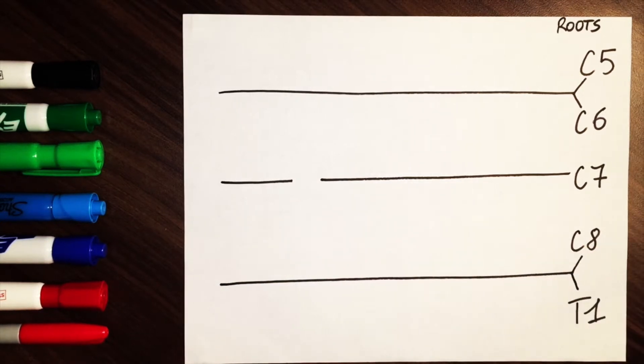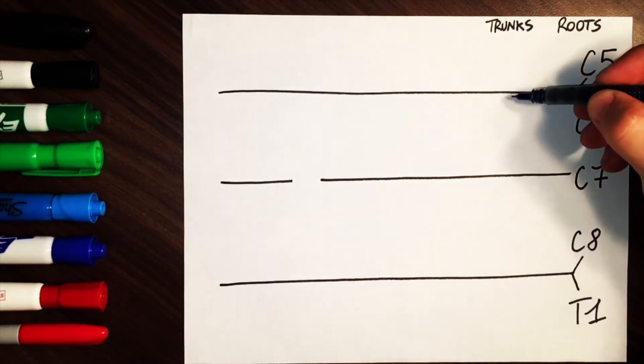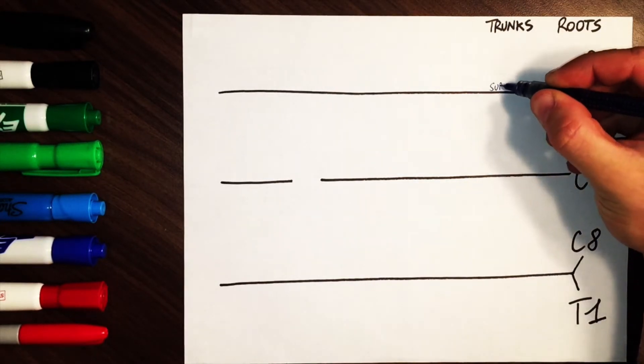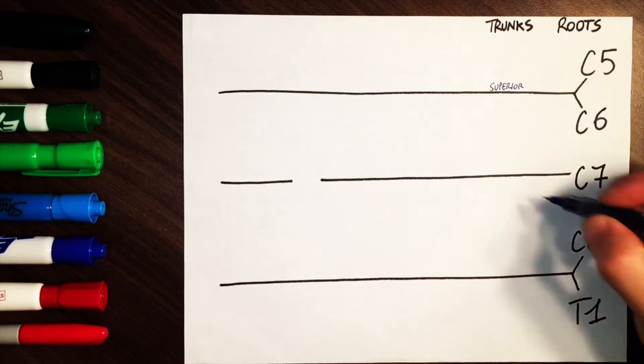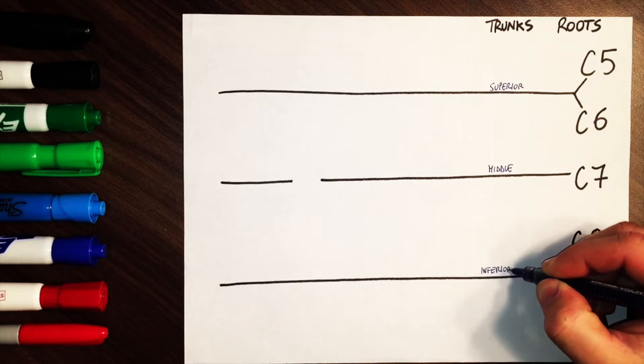Right after the roots, we have the trunks, which are defined by their anatomical location. The trunk originating from C5 and C6 is superior, the one from C7 is middle, and the one from C8 and T1 is inferior.